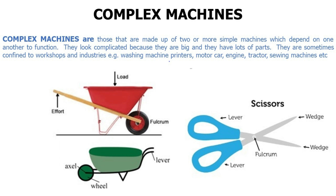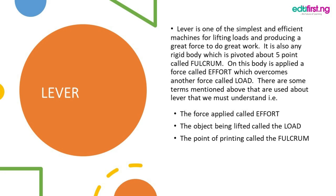Examples of complex machines are printers, motor cars, engines, and tractors. Now, what is a lever? A lever is one of the simplest and most efficient machines for lifting loads and producing great work. It is any rigid body which is pivoted about a fixed point called the fulcrum, and on this body a force called effort is applied, which overcomes another force called the load.